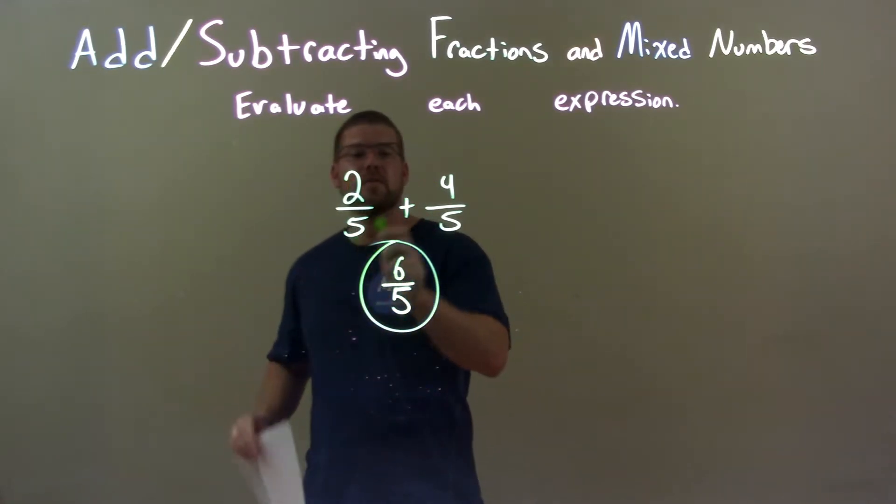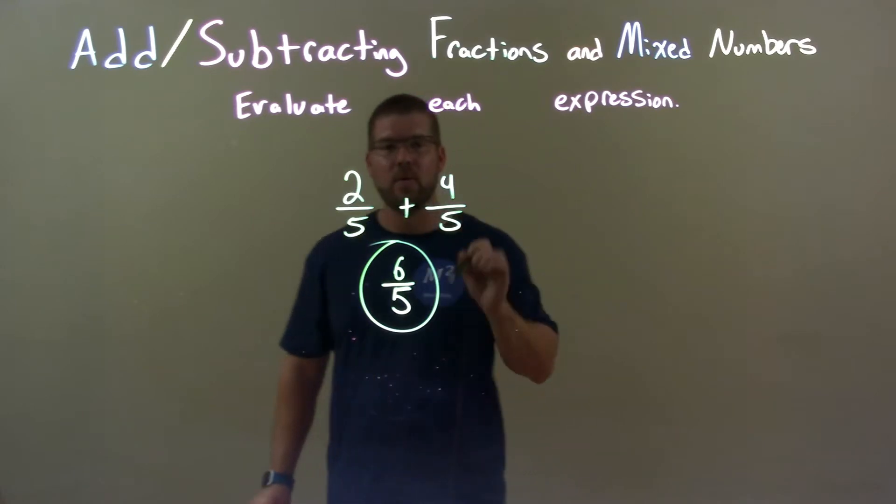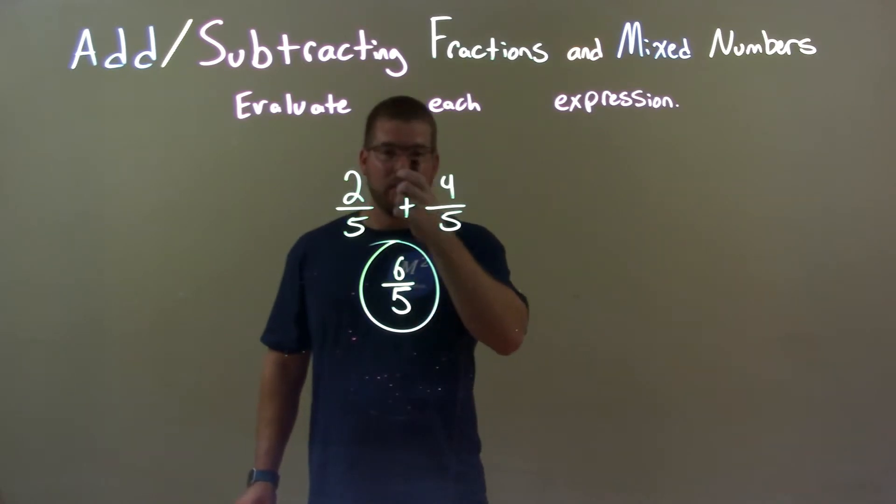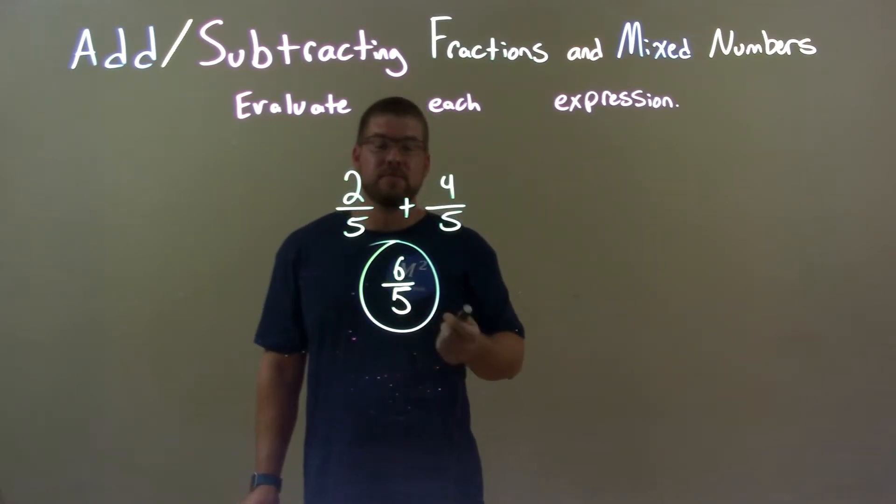Quick recap. We're given 2 fifths plus 4 fifths and we have to add those together. Since the denominator is the same, we bring that down and we just have to add the numerator. 2 plus 4 is 6, so our final answer here is just 6 fifths.